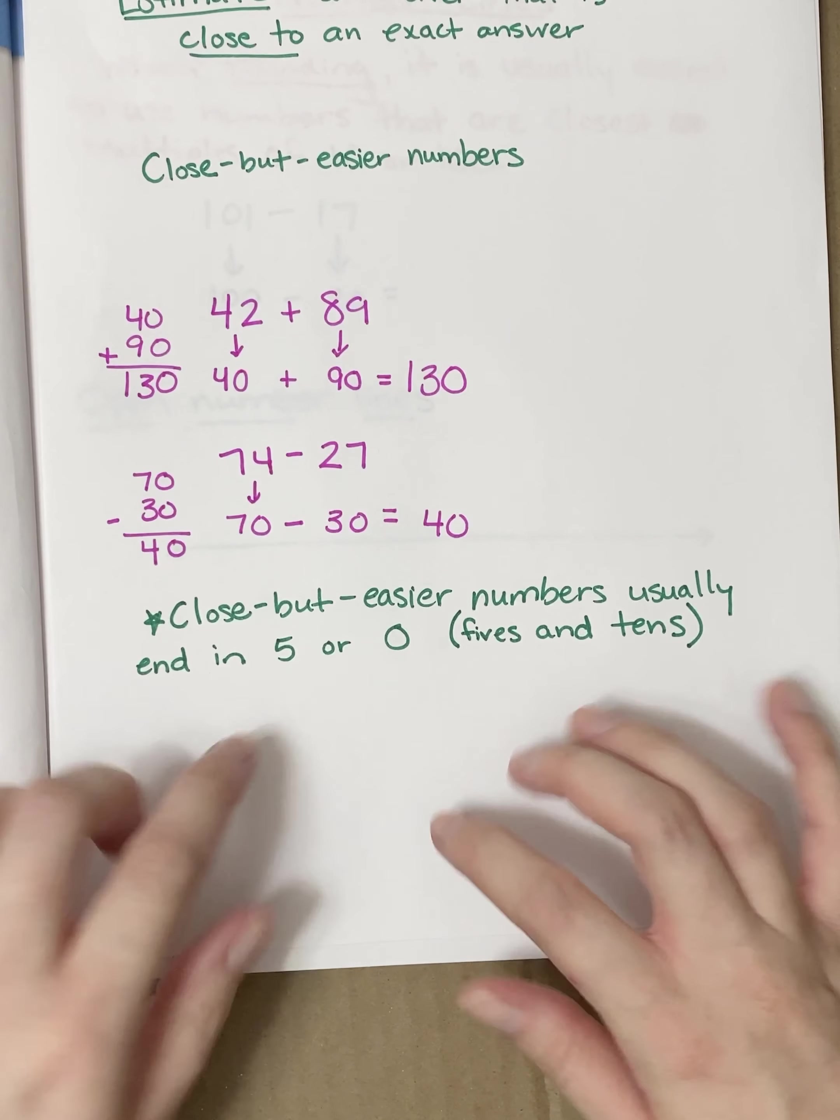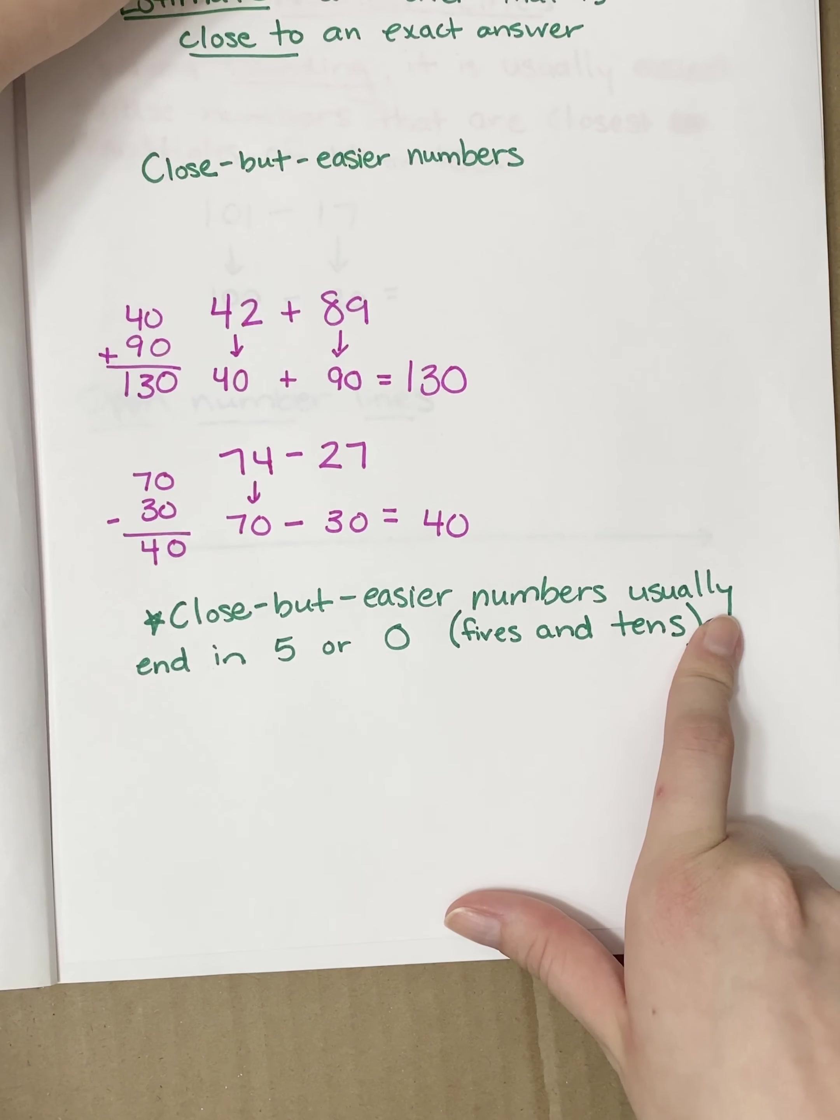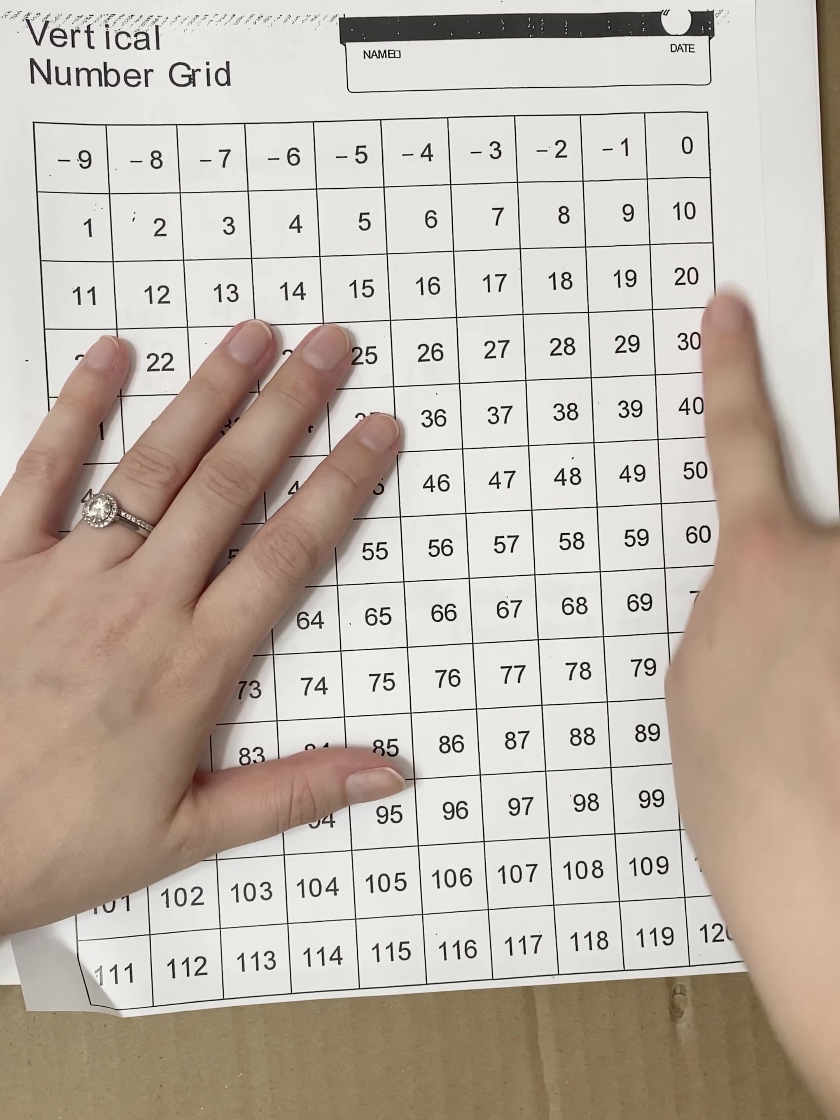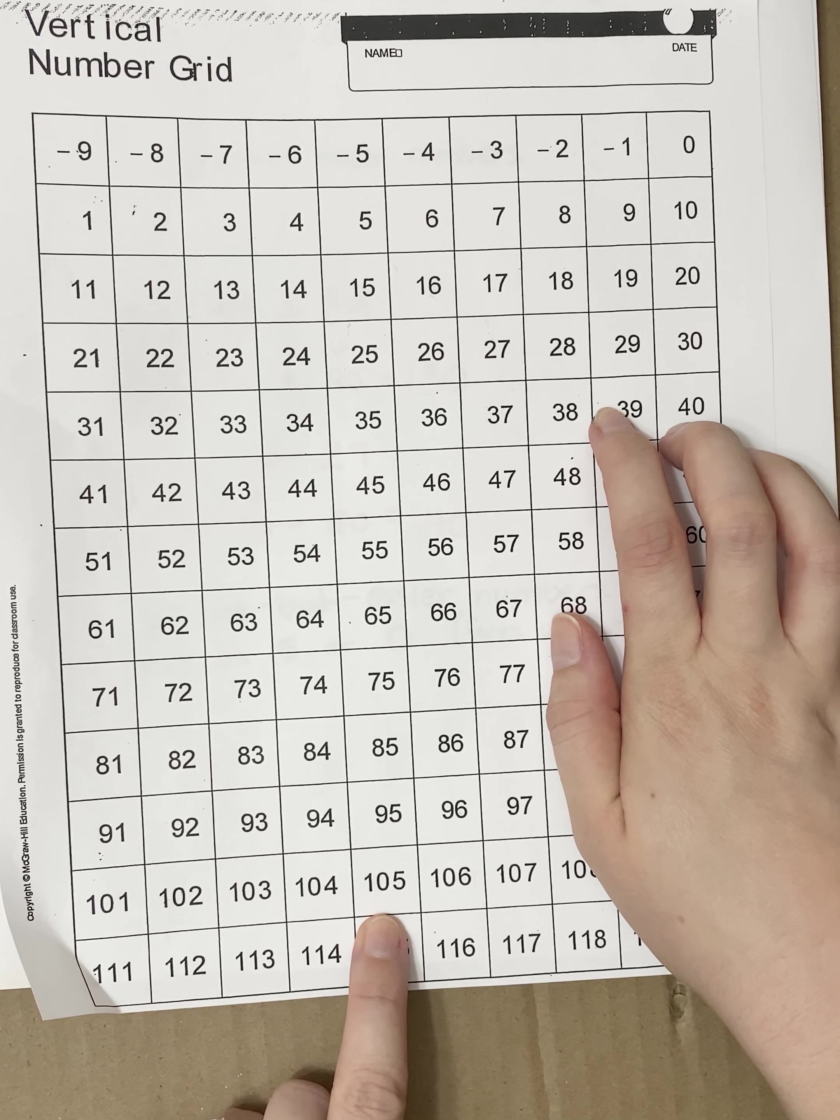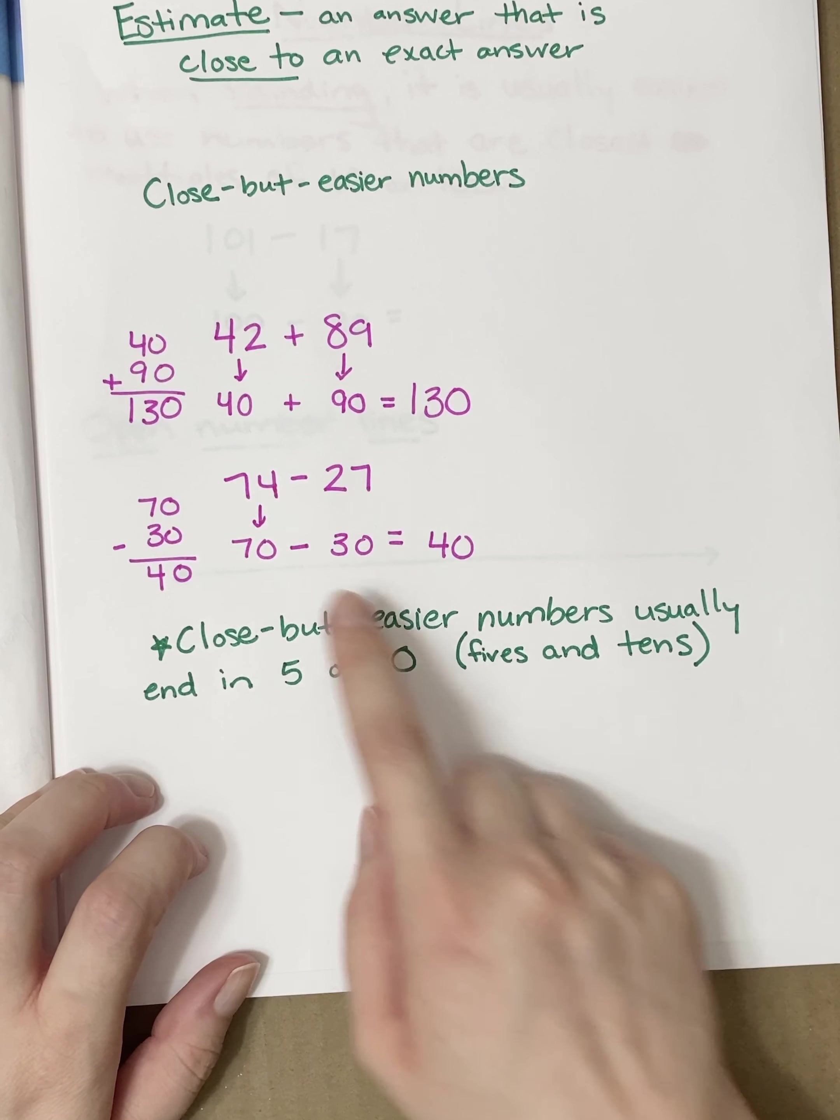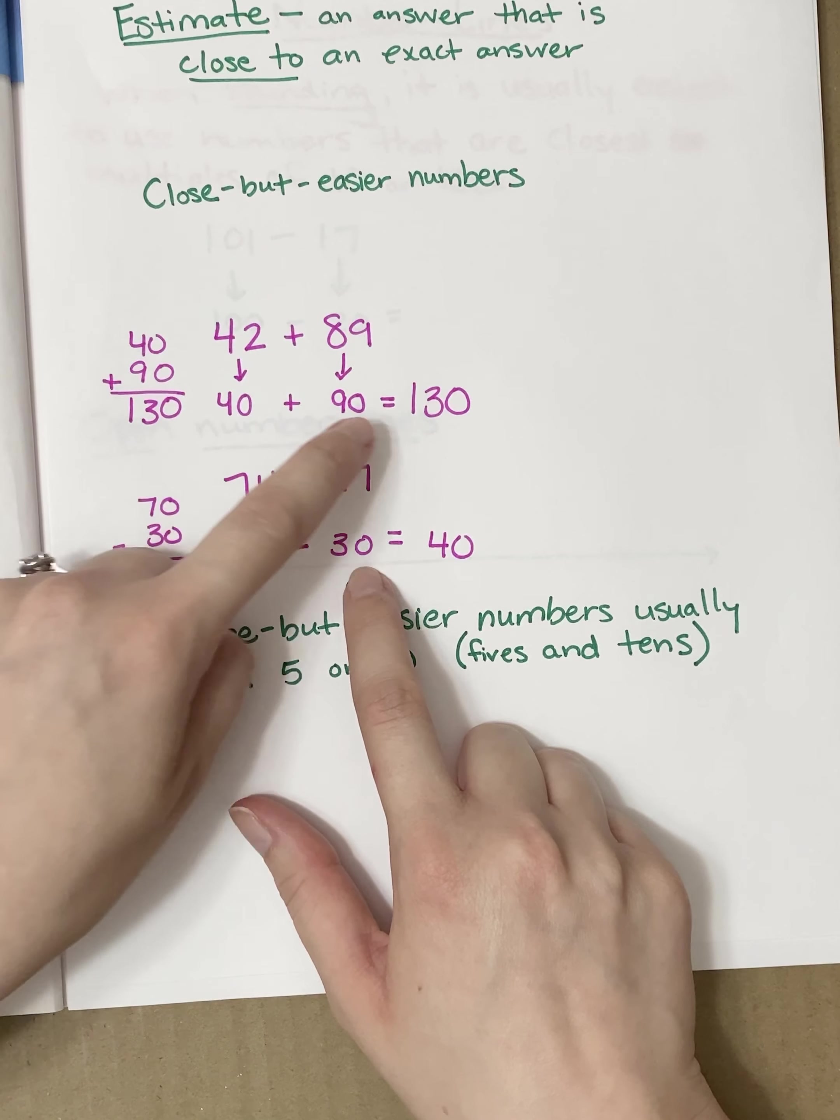And something to notice. They usually end in 5 or 0, which means nice numbers that work for close but easier numbers usually end in 0s and sometimes 5s. Those are usually the nicest close but easier numbers to use. If you look at back at the examples, I used ones that are all 10s.